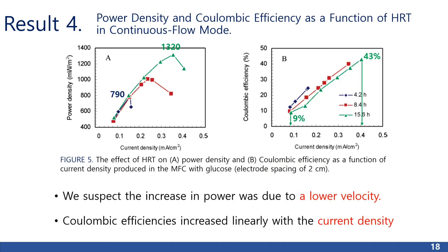Result 4 — Power density and coulombic efficiency as a function of HRT in continuous flow mode: the maximum power density increased from 790 mW per m² at HRT 4.2 hours to 1,320 mW per m² at HRT 15.6 hours. The increase in power is suspected to be due to a lower velocity and therefore a lower shear rate in the fibrous anode, as substrate concentrations in this range used to maintain a constant organic loading rate should not have affected maximum power generation. Coulombic efficiencies increased linearly with current density; for example, at HRT 15.6 hours, CE increased from 9% to 43% as current density increased from 0.085 mA per centimeter square to 0.41 mA per centimeter square.